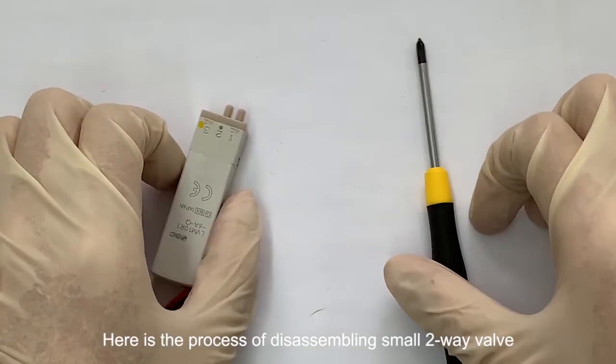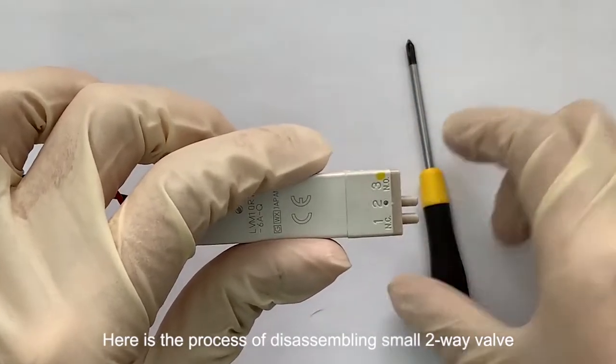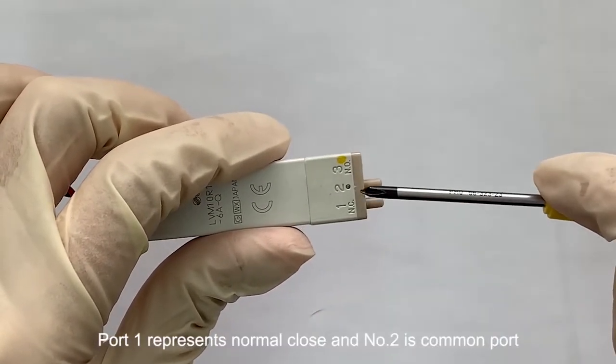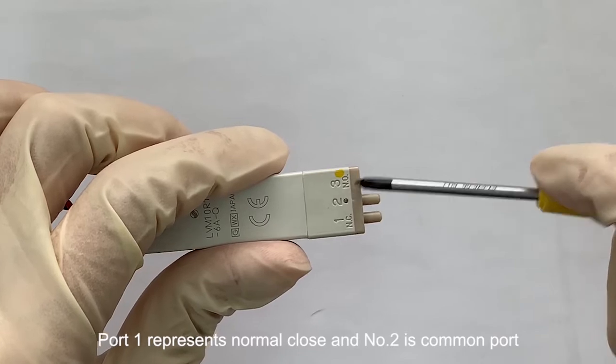Here is the process of disassembling a small two-way valve. Port 1 represents normal close and number 2 is common port.